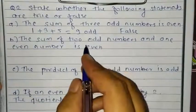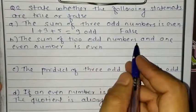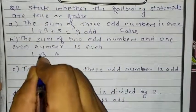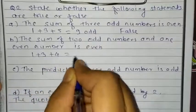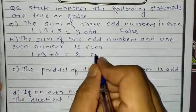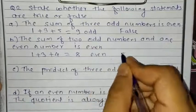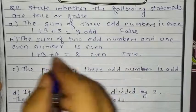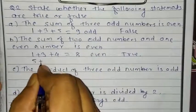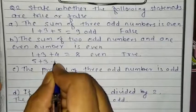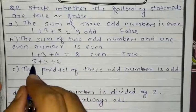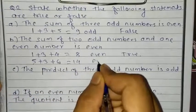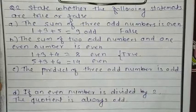Second one, part B: sum of 2 odd numbers and one even number. I am taking odd numbers 1 and 3, and even number 4. Doing the calculation, it comes to 8, and it is even. So the second one is true. Taking one more example for cross-checking: odd numbers 5 and 3, and even number 6. So 6 plus 5 is 11, 11 plus 3 is 14. 14 is also an even number. So our result is true.